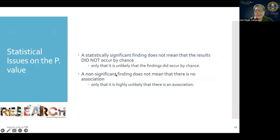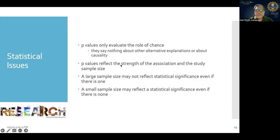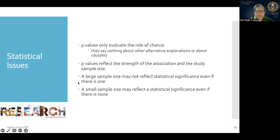There are important statistical issues with p-values. A significant finding does not mean the results did not occur by chance — it only means it is unlikely. P-values only evaluate the role of chance and say nothing about causality or alternative explanations. P-values also reflect both the strength of association and the study sample size — a large sample size may produce statistical significance even if there is none, and a small sample size may fail to show it even if it exists.